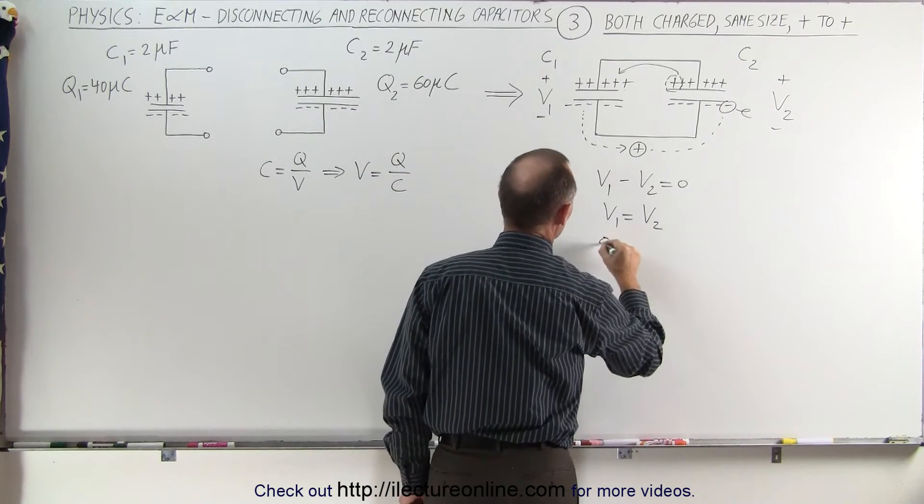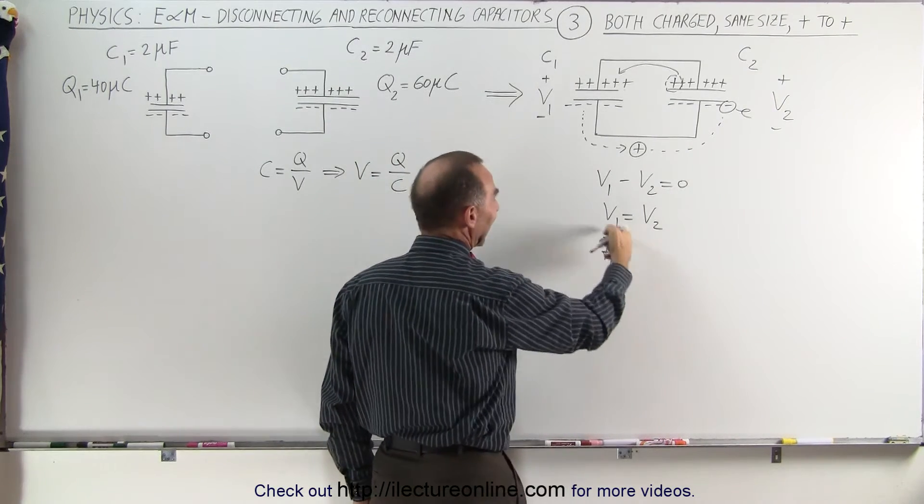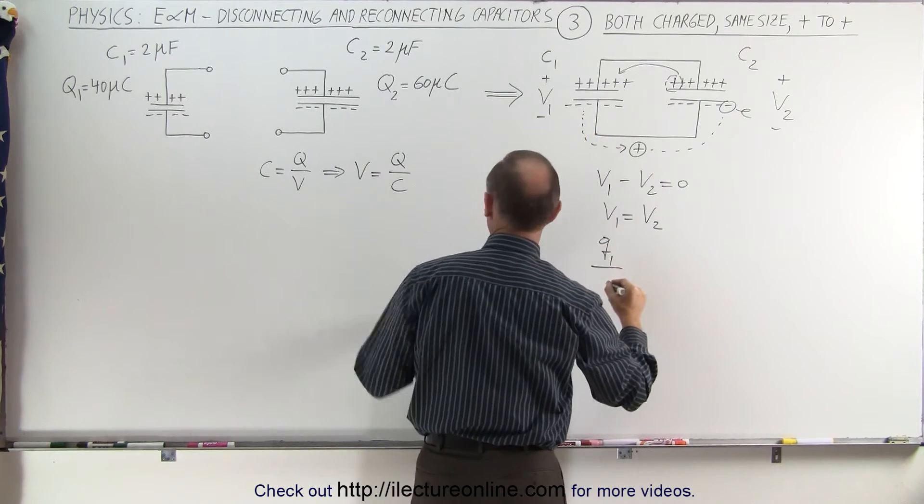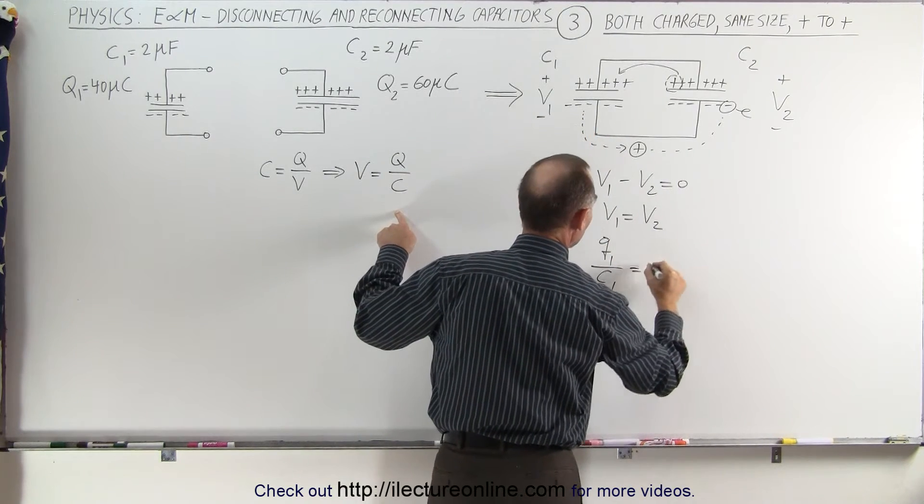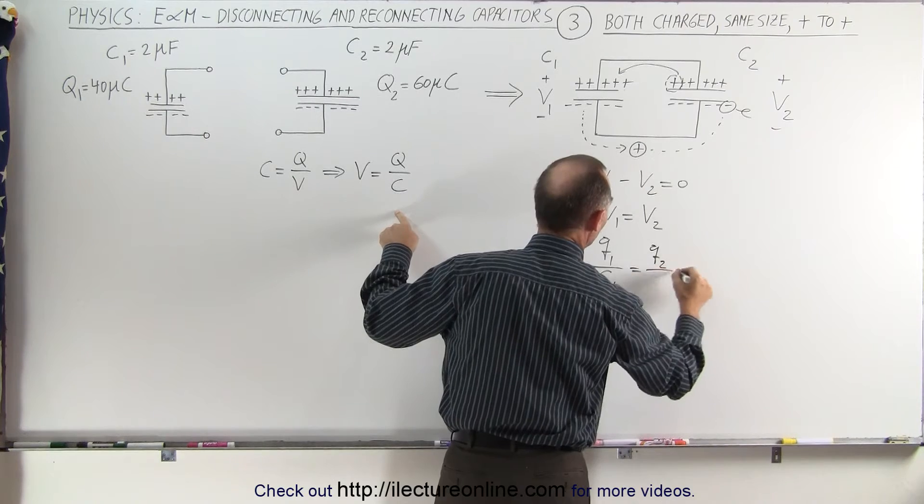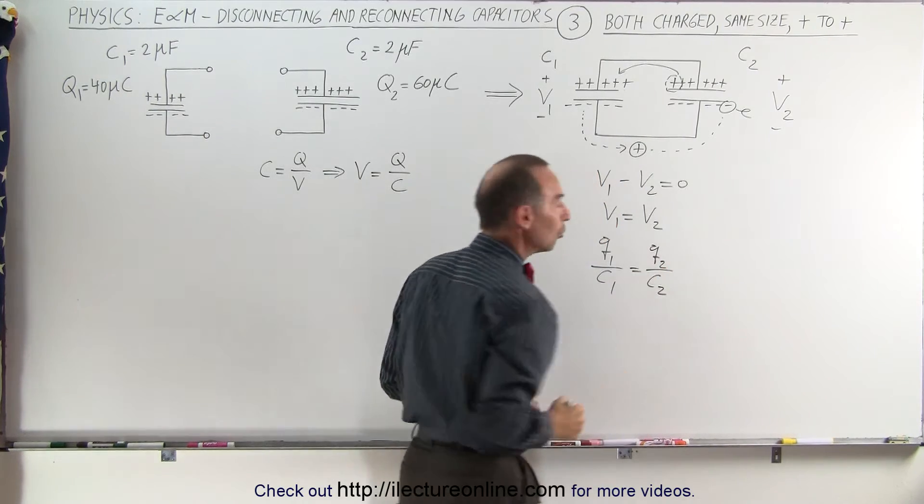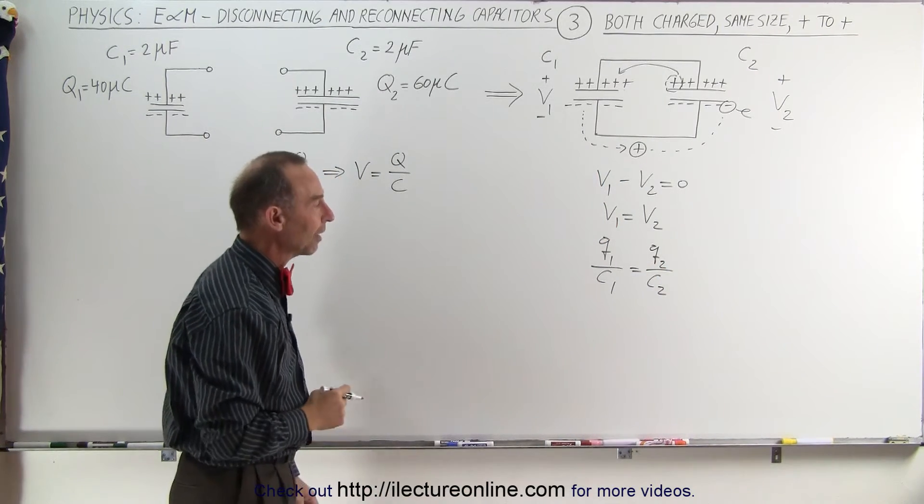That means that Q1, which represents the end charge on capacitor C1 divided by C1, must equal Q2 divided by C2, Q2 being the end charge on capacitor 2.